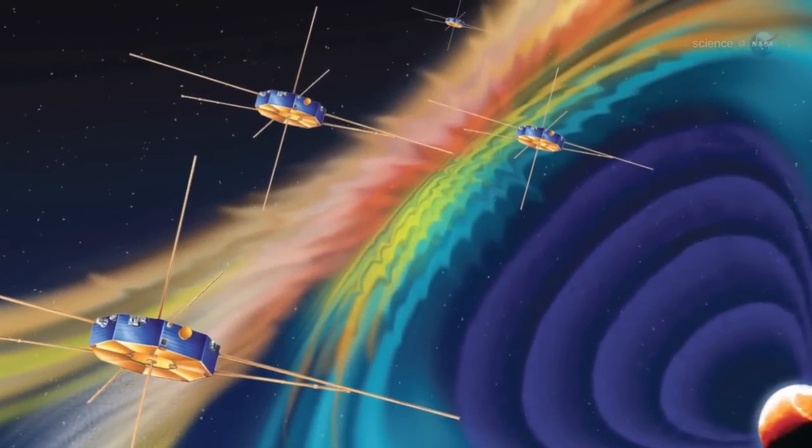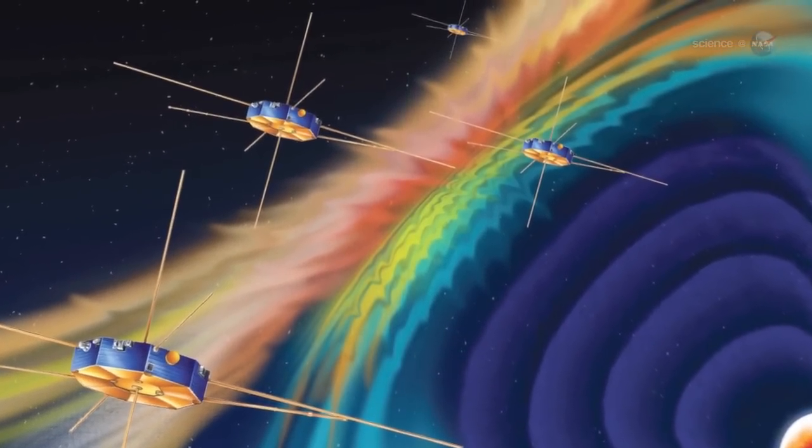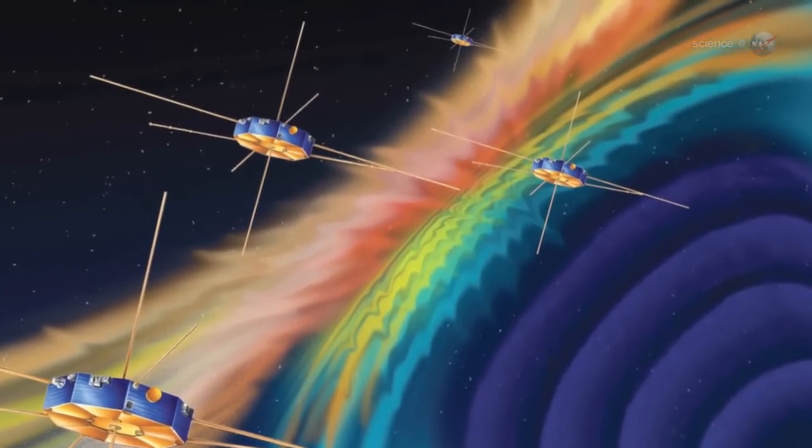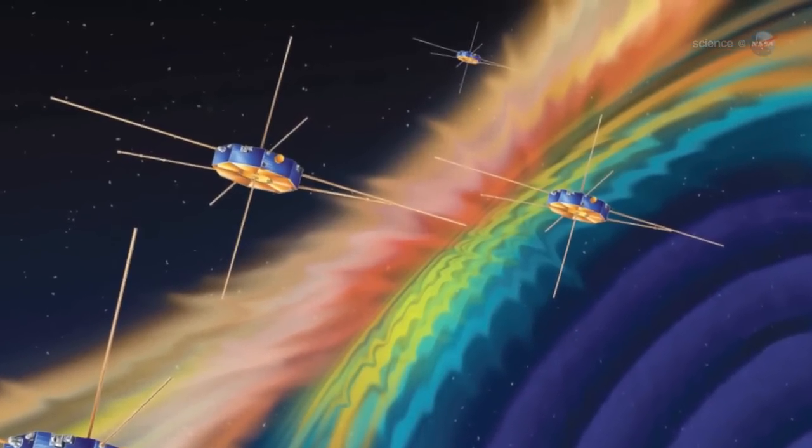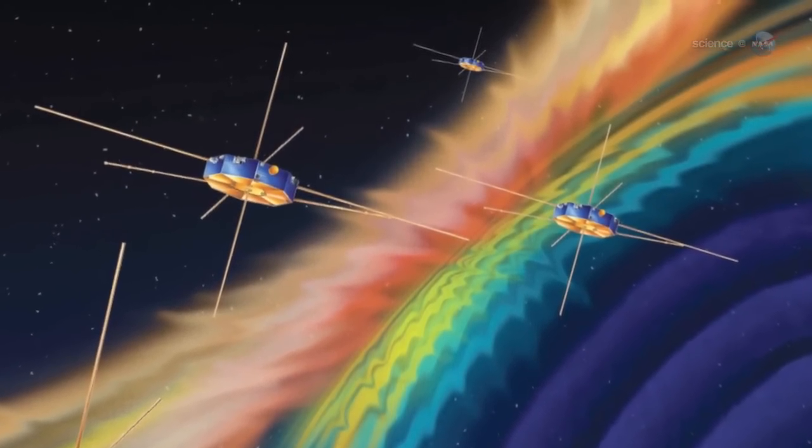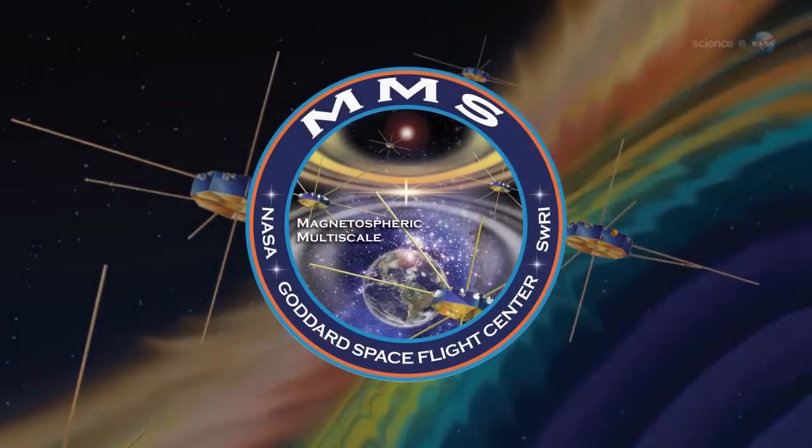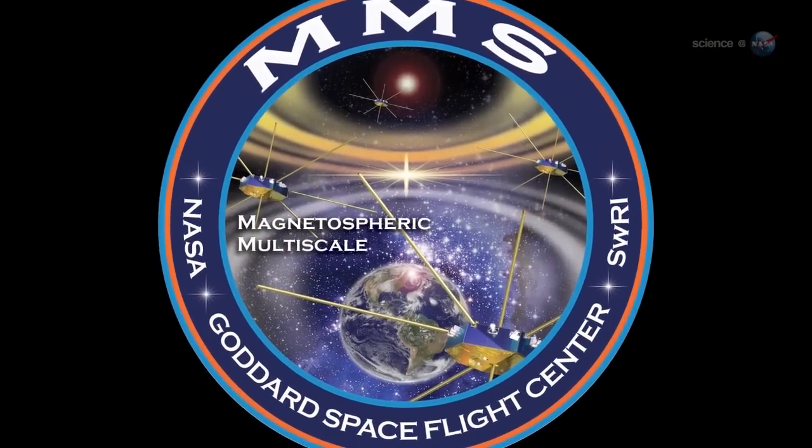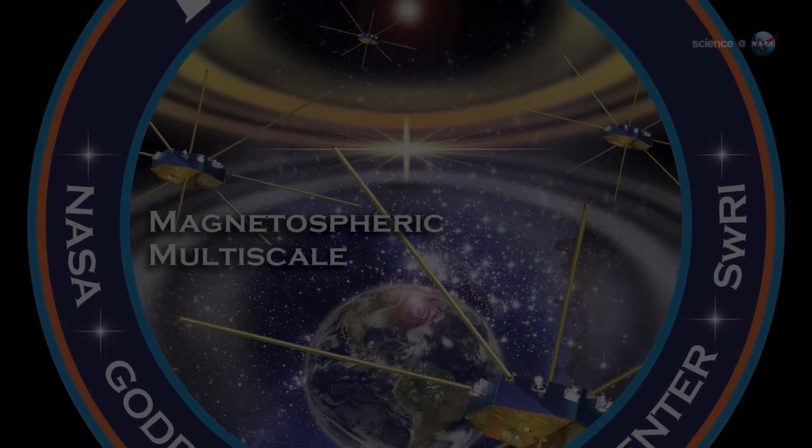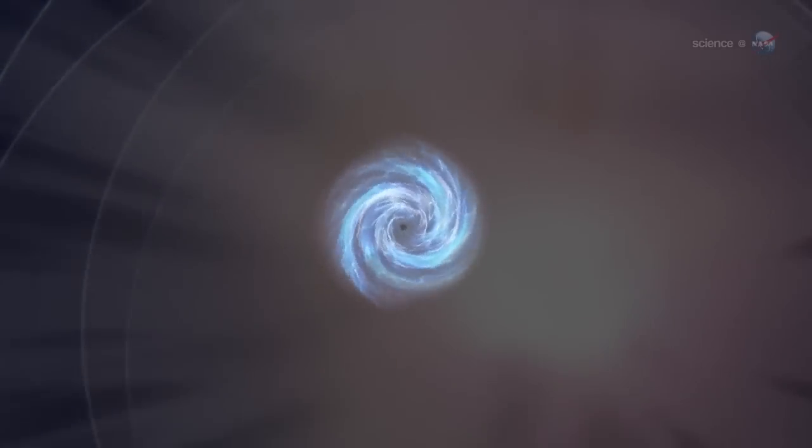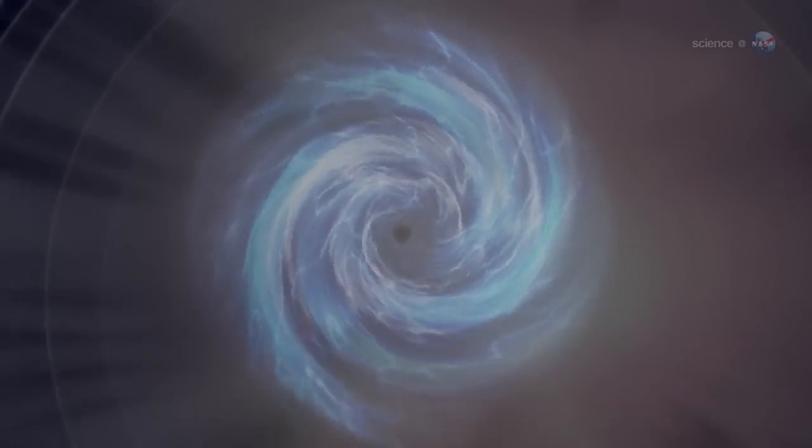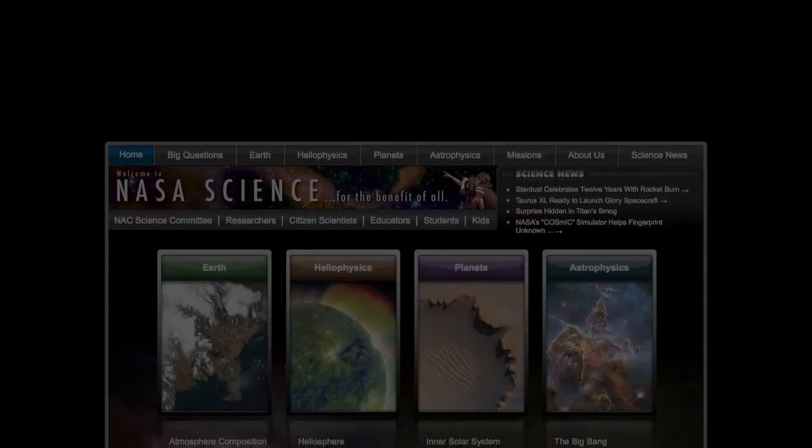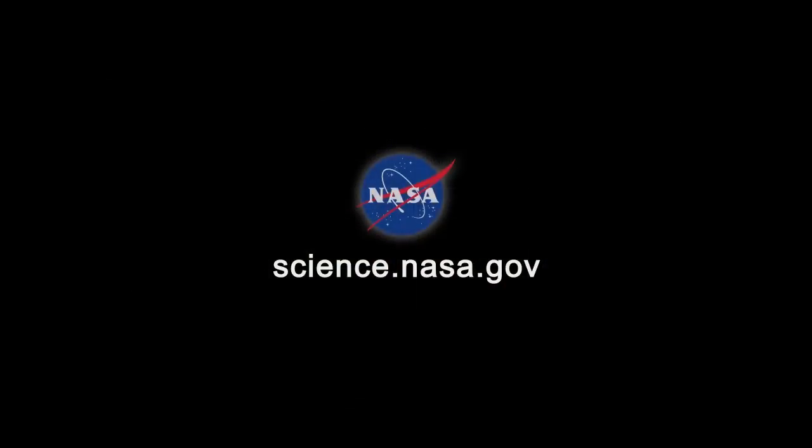This means that a single member of the MMS constellation, using the diagnostics, can find a portal and alert other members of the constellation. Mission planners long thought that MMS might have to spend a year or so learning to find portals before it could study them. Scudder's work shortcuts the process, allowing MMS to get to work without delay. It's a shortcut worthy of the best portals of fiction. Only this time, the portals are real. And with the new signposts, we know how to find them. For a portal to more NASA science news, visit science.nasa.gov.